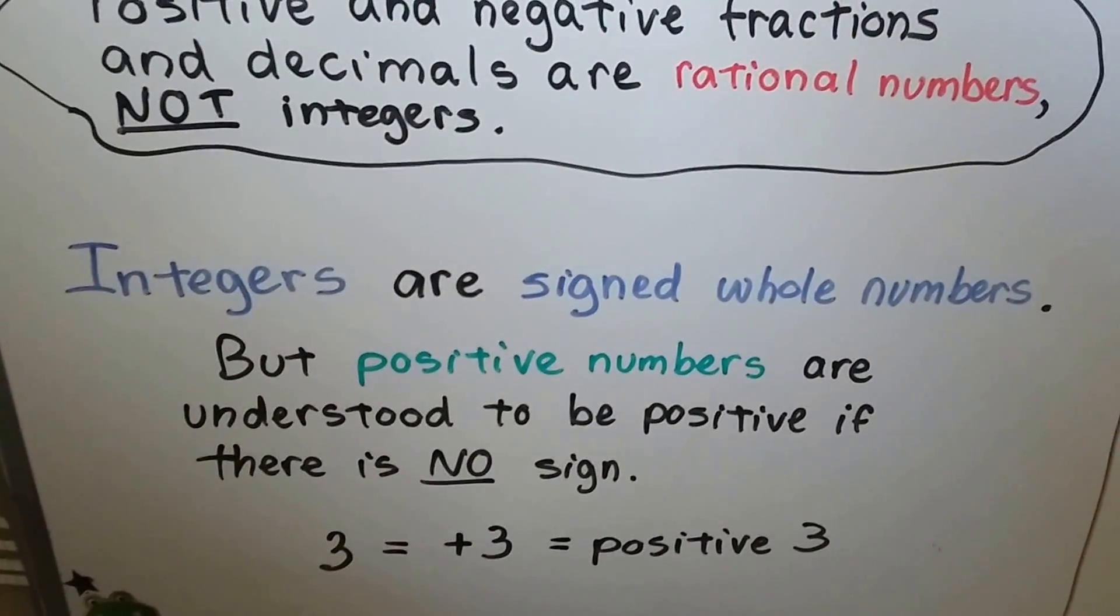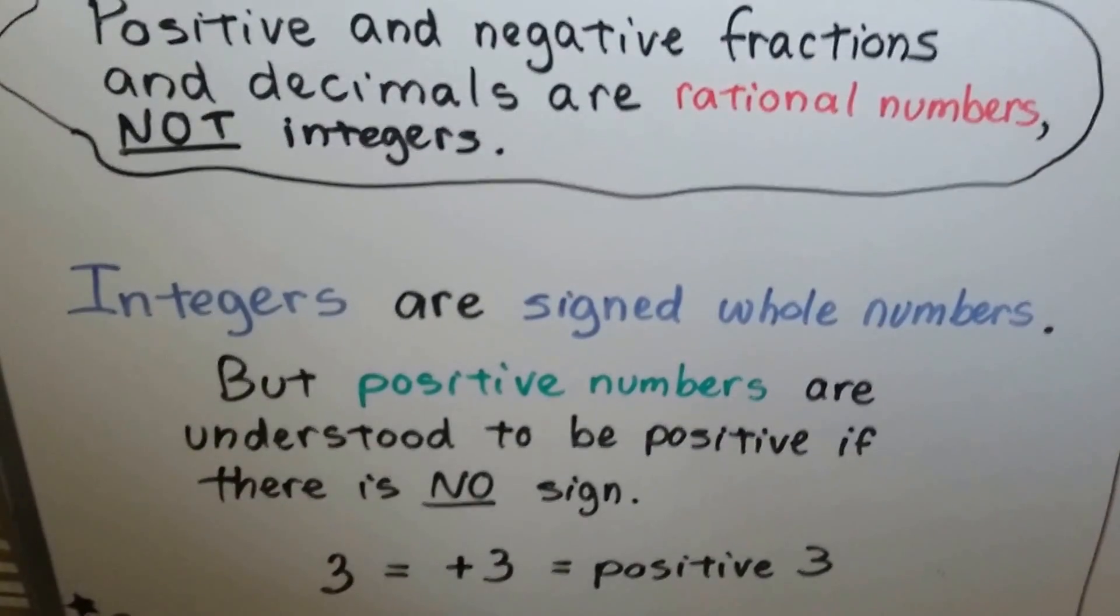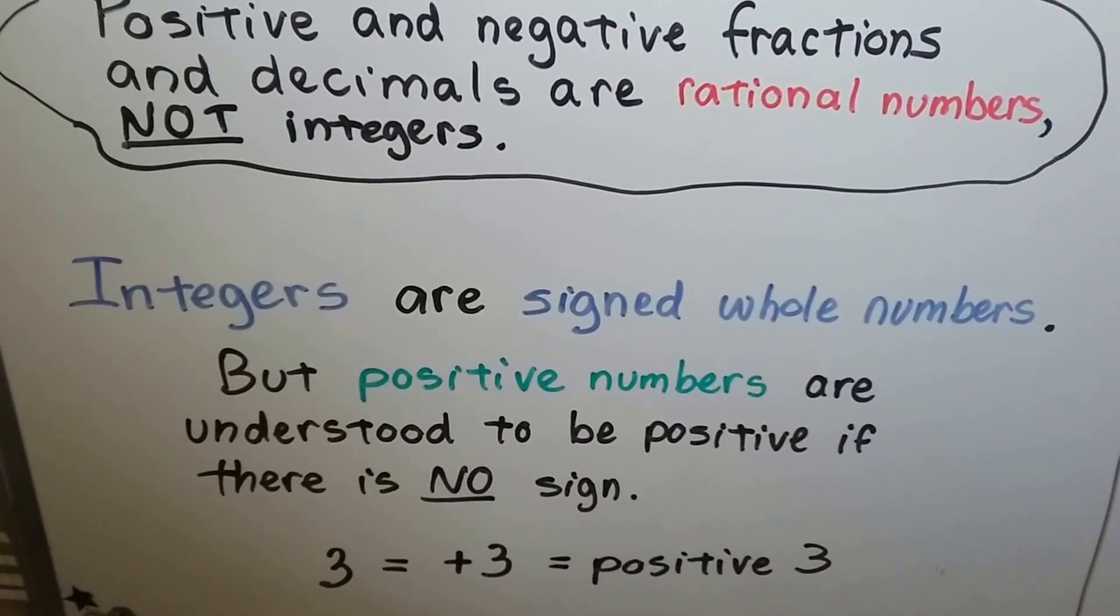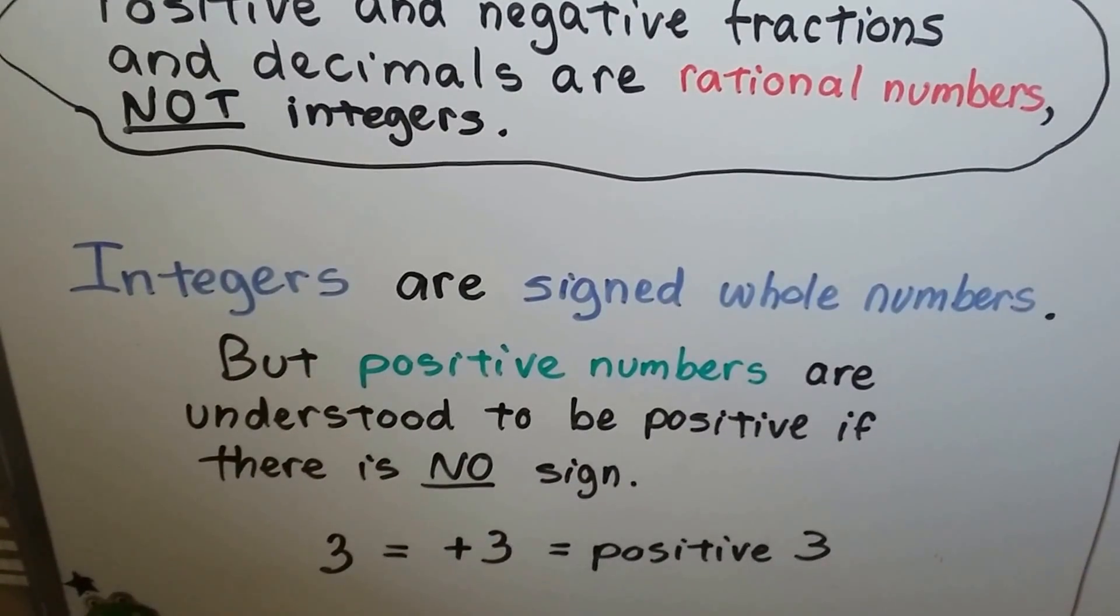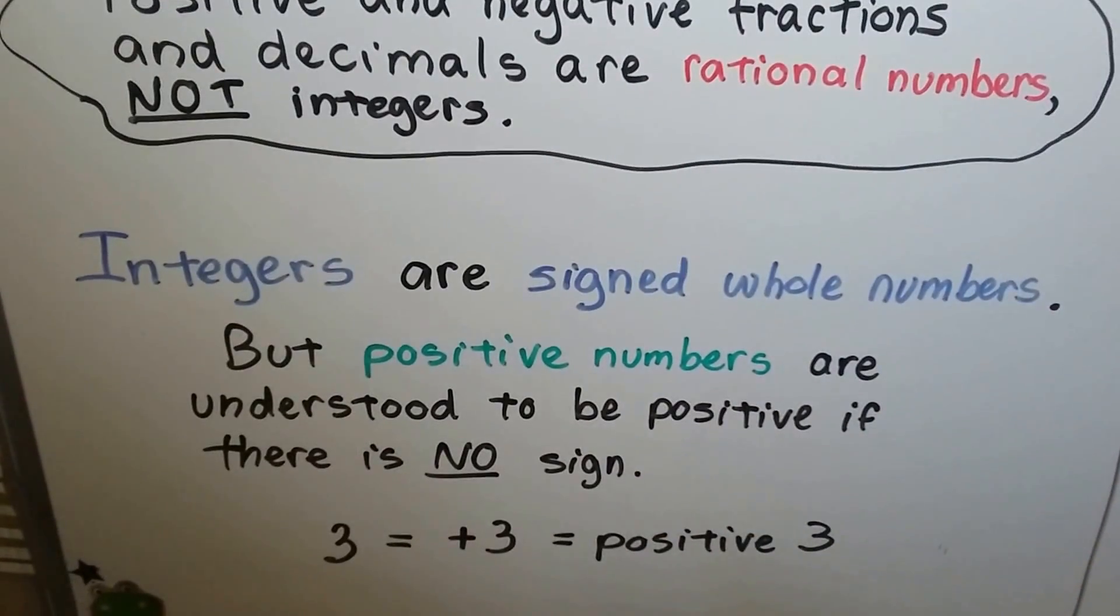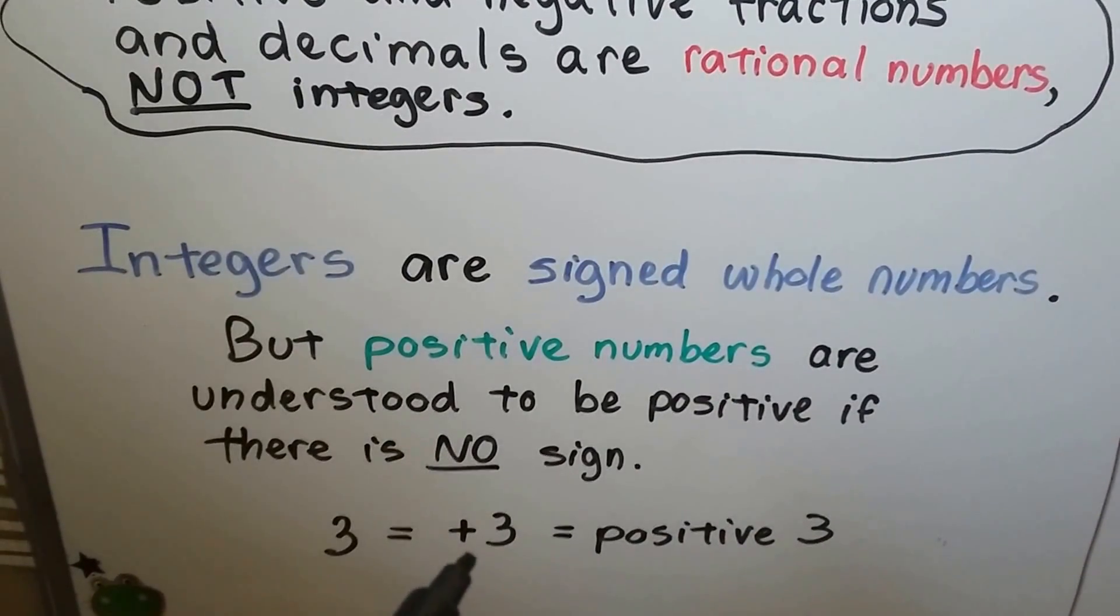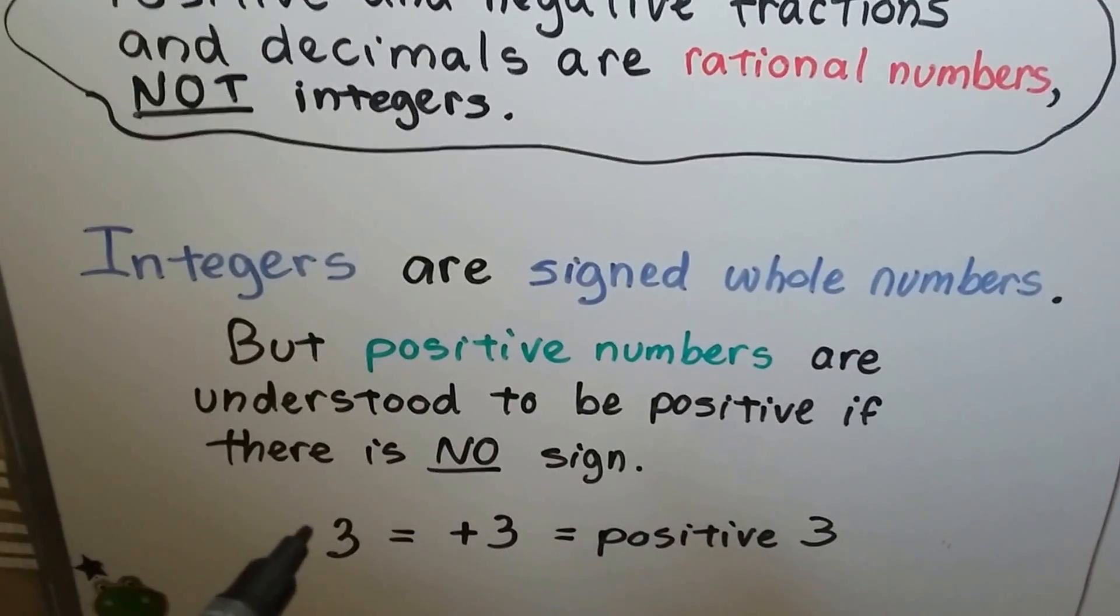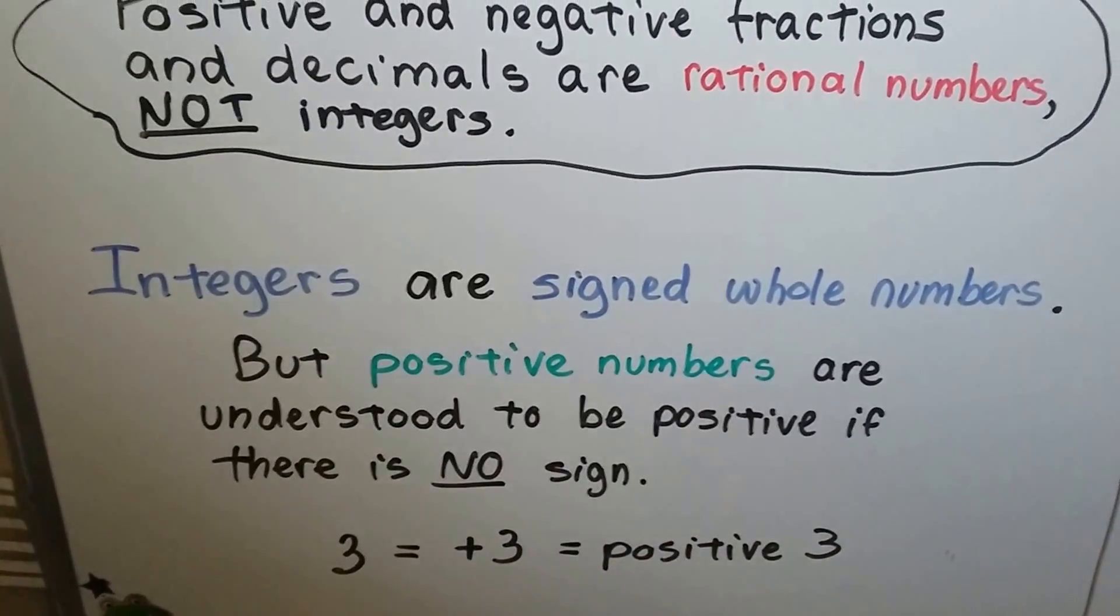They'll have a negative sign or a positive sign. They'll have a minus sign or a plus sign. But positive integers, positive numbers, are understood to be positive if there's no sign. So if we see a 3, we know it's positive 3. You're going to see a minus sign in front of it, then you know it's a negative 3.